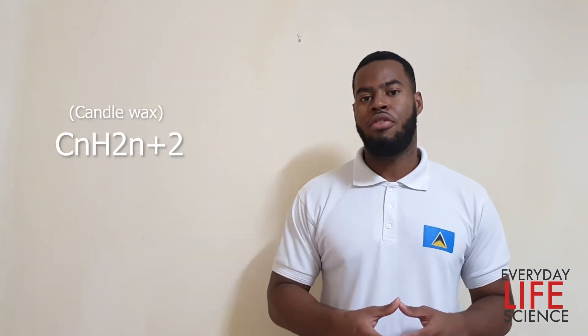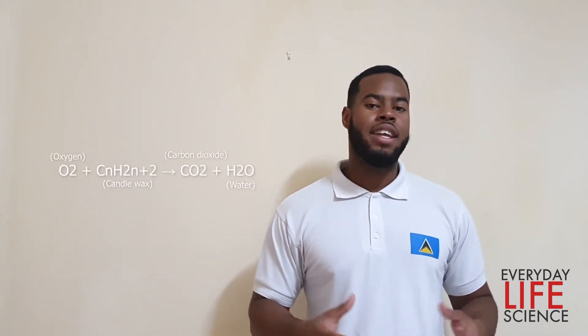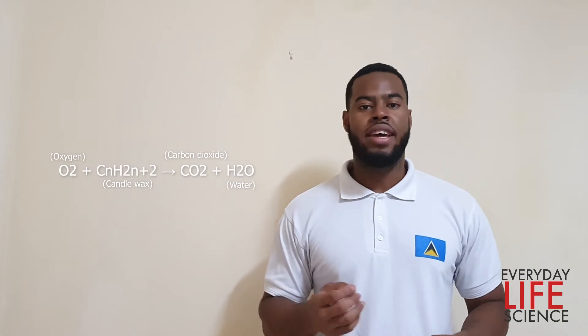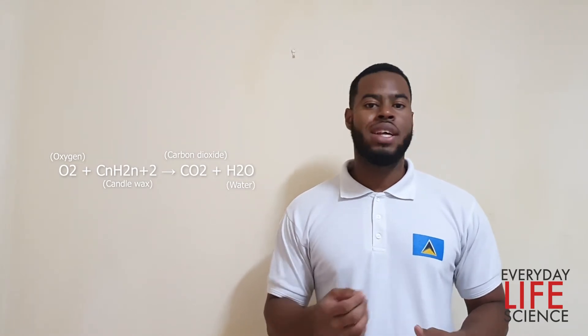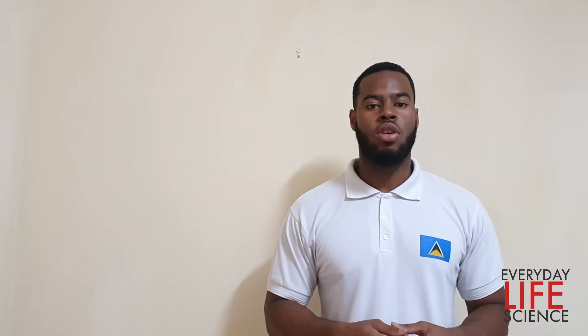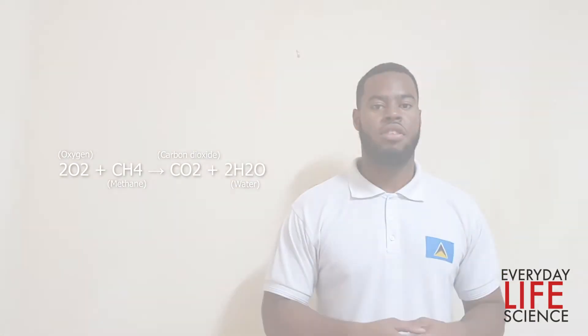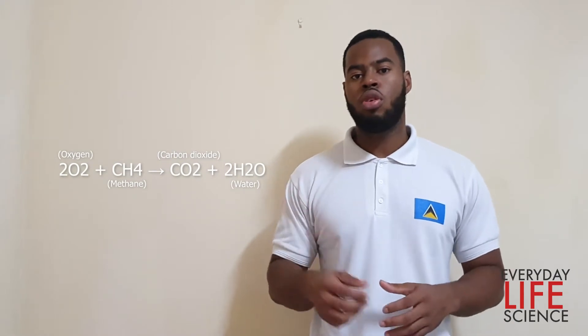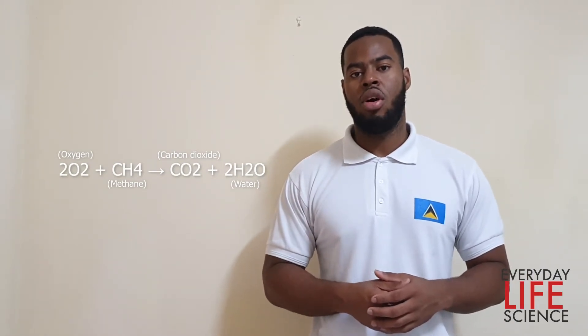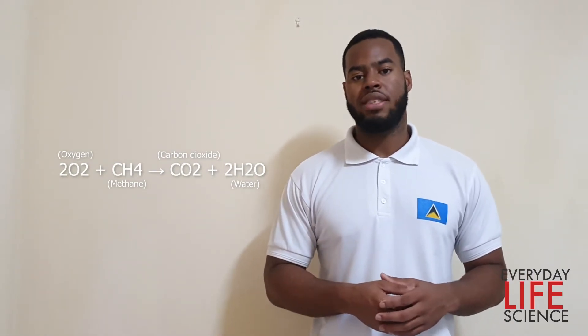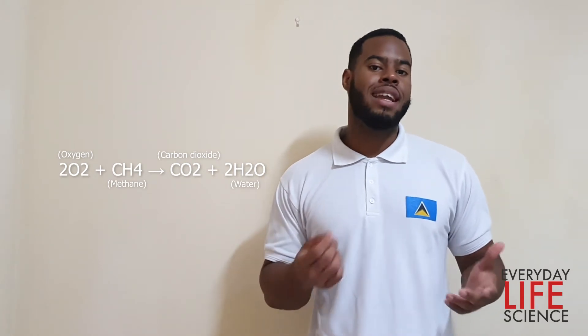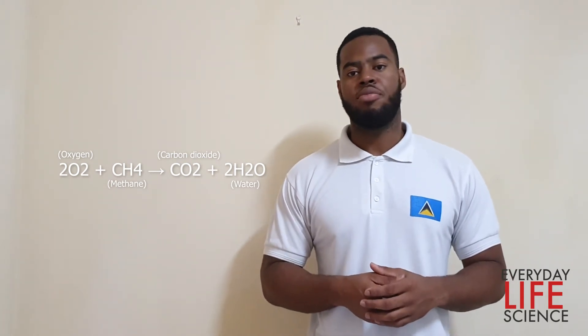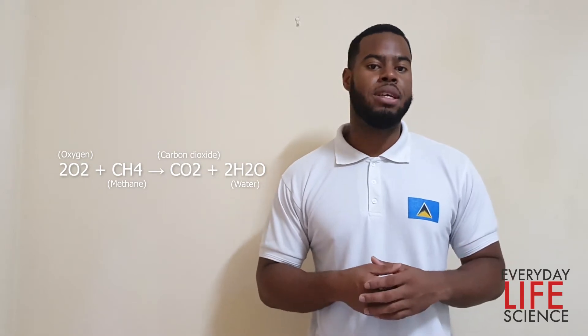The candle wax has a chemical formula as shown here. The combustion chemical reaction is set up like this. The n in the candle wax formula is any positive integer, so let's take the simplest case where n is equal to one. Therefore we get this chemical equation. Notice for every two moles of oxygen used by the flame, one mole of carbon dioxide is produced.